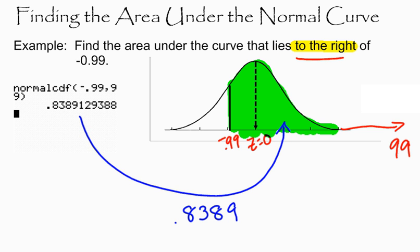In my next video, I'll show you how to find the area between two z-scores that are pretty close to each other. And I don't have to use 99 or -99 as my left-hand or right-hand boundary.